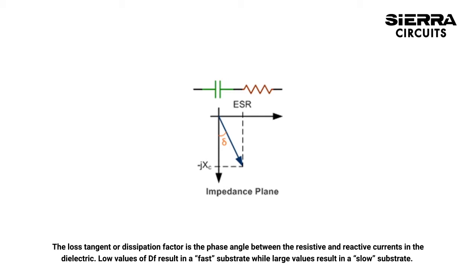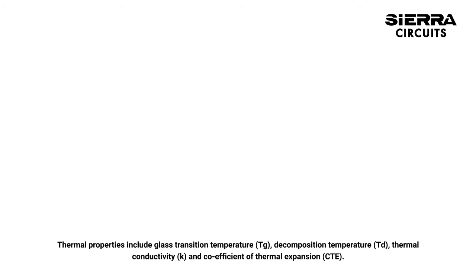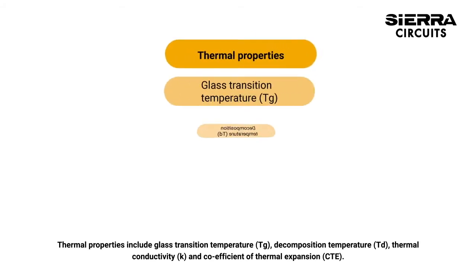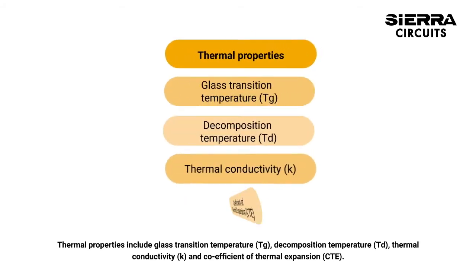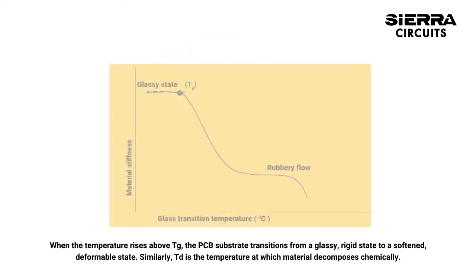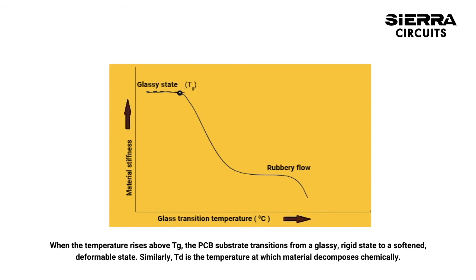Thermal properties include glass transition temperature, decomposition temperature, thermal conductivity, and coefficient of thermal expansion. When the temperature rises above Tg, the PCB substrate transitions from a glassy, rigid state to a softened, deformable state.